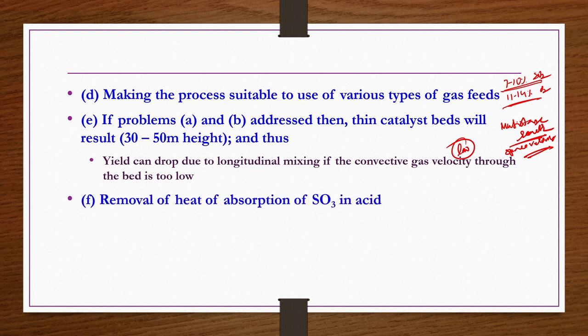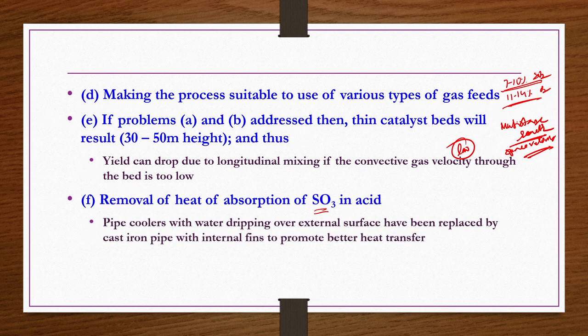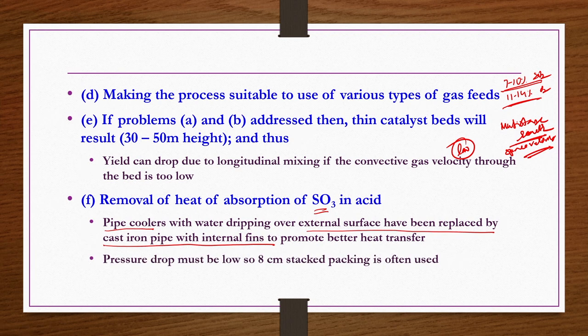Removal of heat of absorption of SO3 in acid: during absorption in both the sulphuric acid tower and oleum tower, lot of heat is liberated, generating steam that can be used for electricity production. Pipe coolers with water dripping over external surfaces have been replaced by cast iron pipes with internal fins to promote better heat transfer. Pressure drop must be low, so 8 centimeter stack packing is often used.